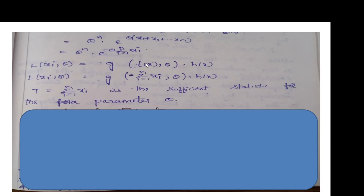We now convert this into the factorization theorem format. Here, t of X is the function summation Xi. So we write it as G of summation Xi, theta into H of X. Therefore, capital T equals summation Xi is the sufficient statistic for the parameter theta.